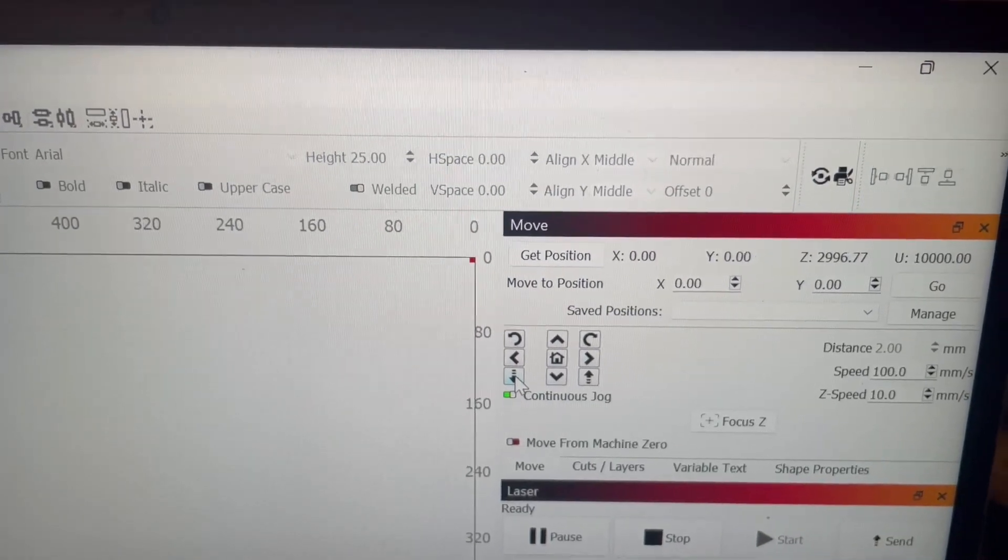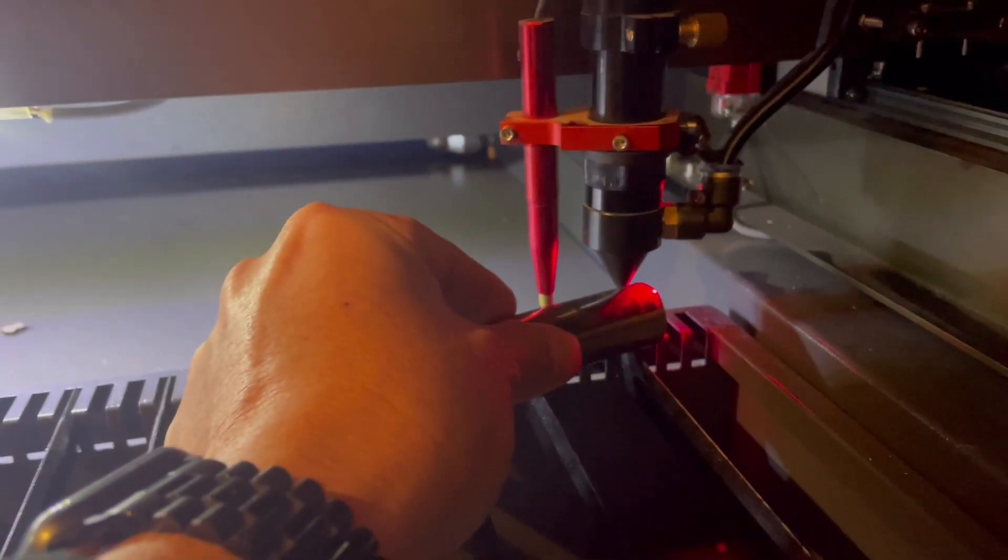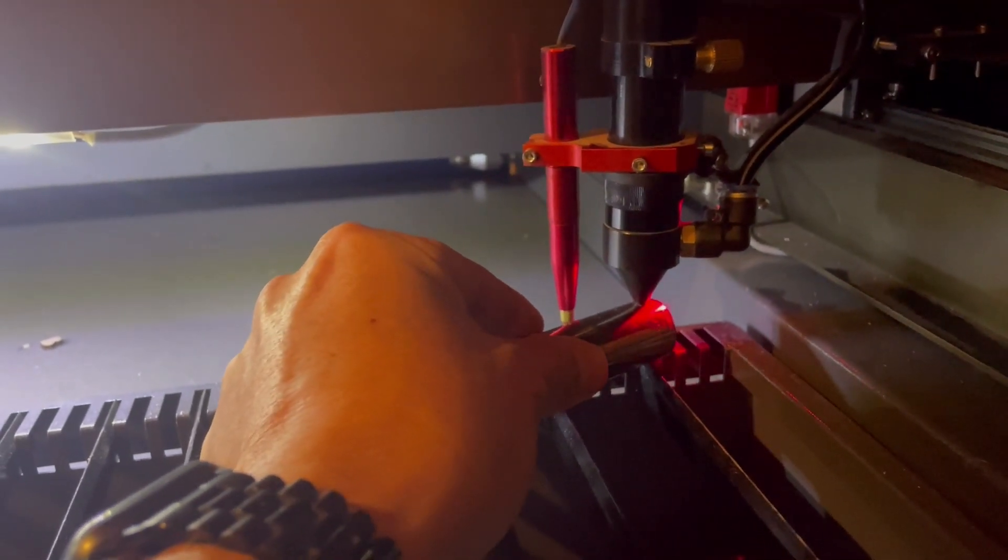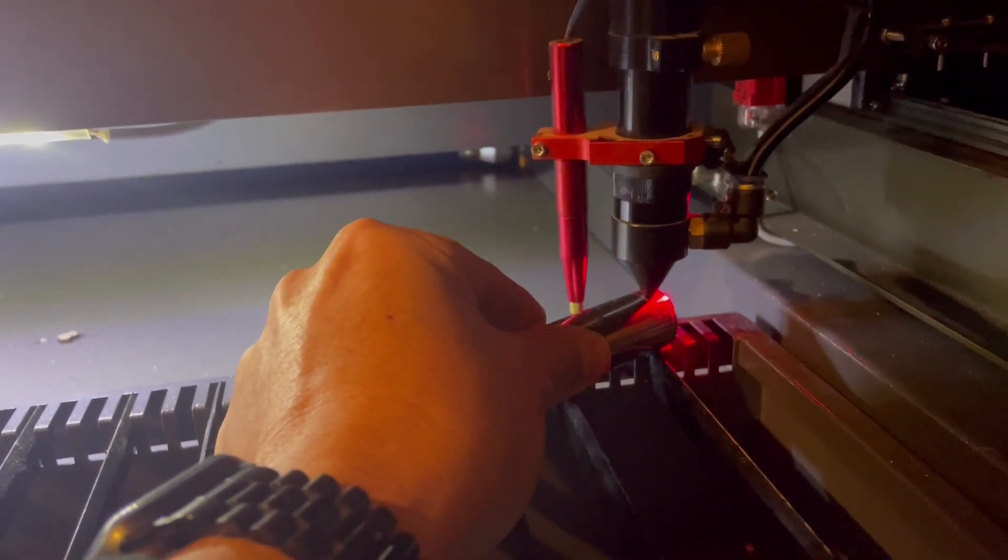Using LightBurn, jog your z-axis so that whatever your spacer is—I'm using a socket—it's just underneath the laser in your starting point. I'm using the home position as my starting point.